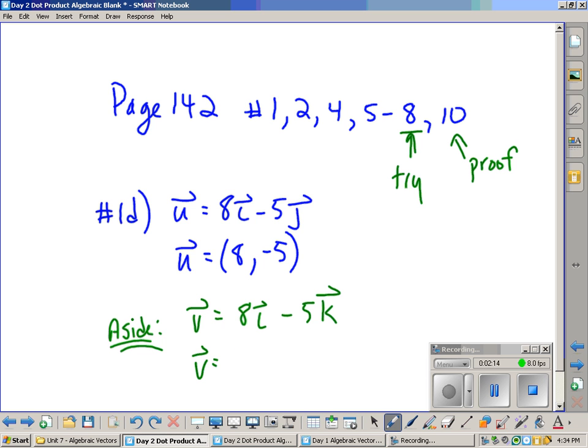So because we're in three dimensions, our component must have three parts to it. The 8 is the i. Since it's negative 5k, that must go in the z part. And since we don't see a j, we know that that's 0.